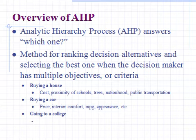The AHP both allows for inconsistency in the judgments and also provides a means to improve consistency. It's a very simple method used to rank decision alternatives and select the best one when the decision maker has multiple objectives or criteria.